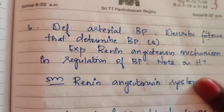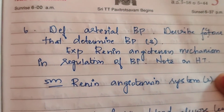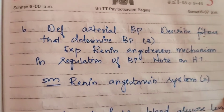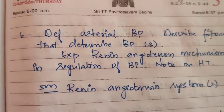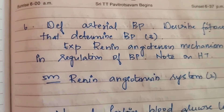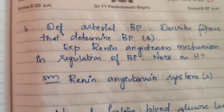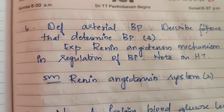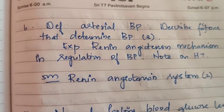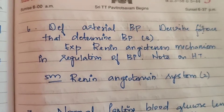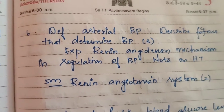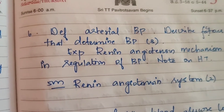Sixth question: Define arterial blood pressure and describe factors that determine blood pressure — asked three times. Factors determining blood pressure and arterial blood pressure is the core question, appearing at both 5 marks and 15 marks levels.